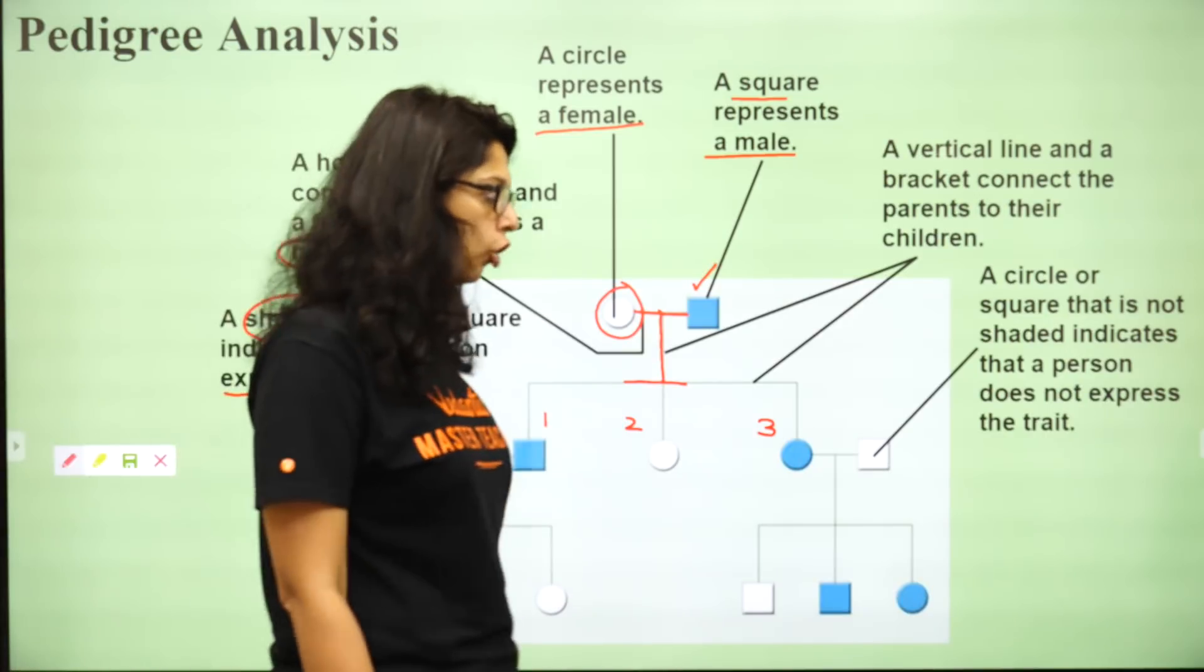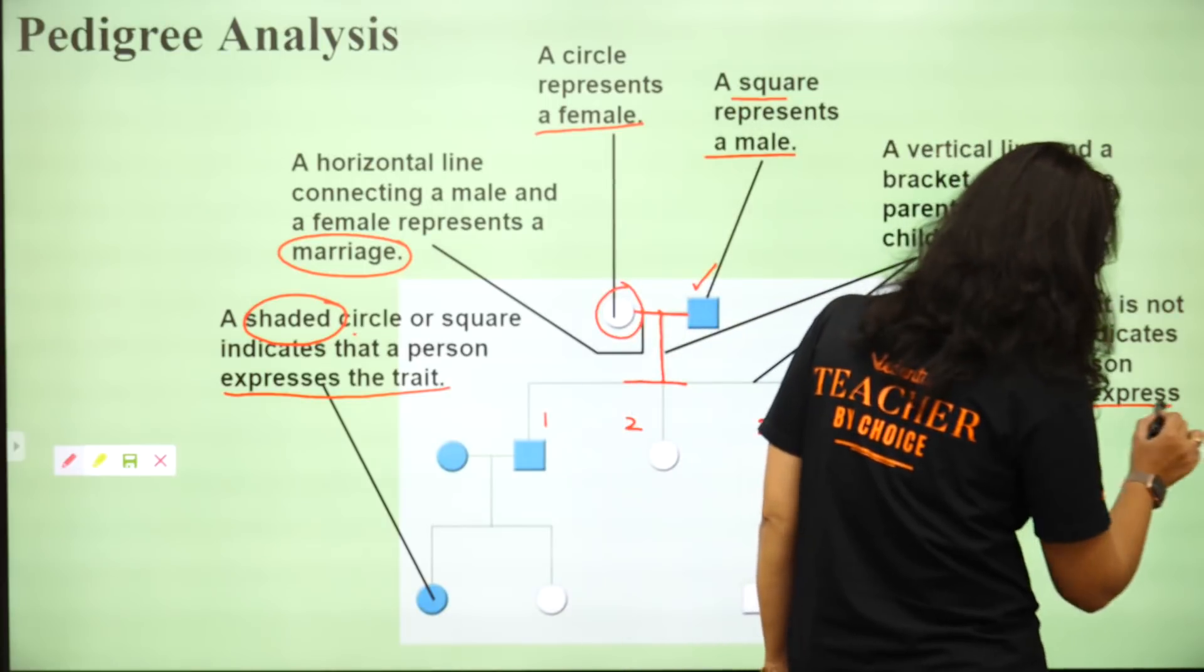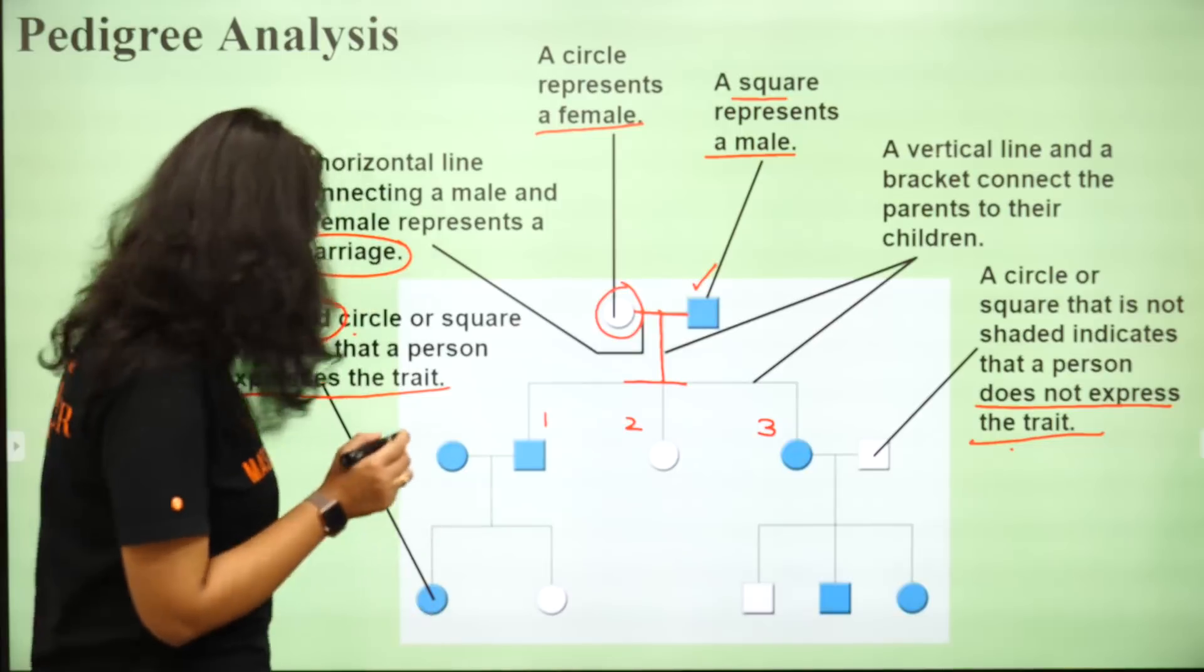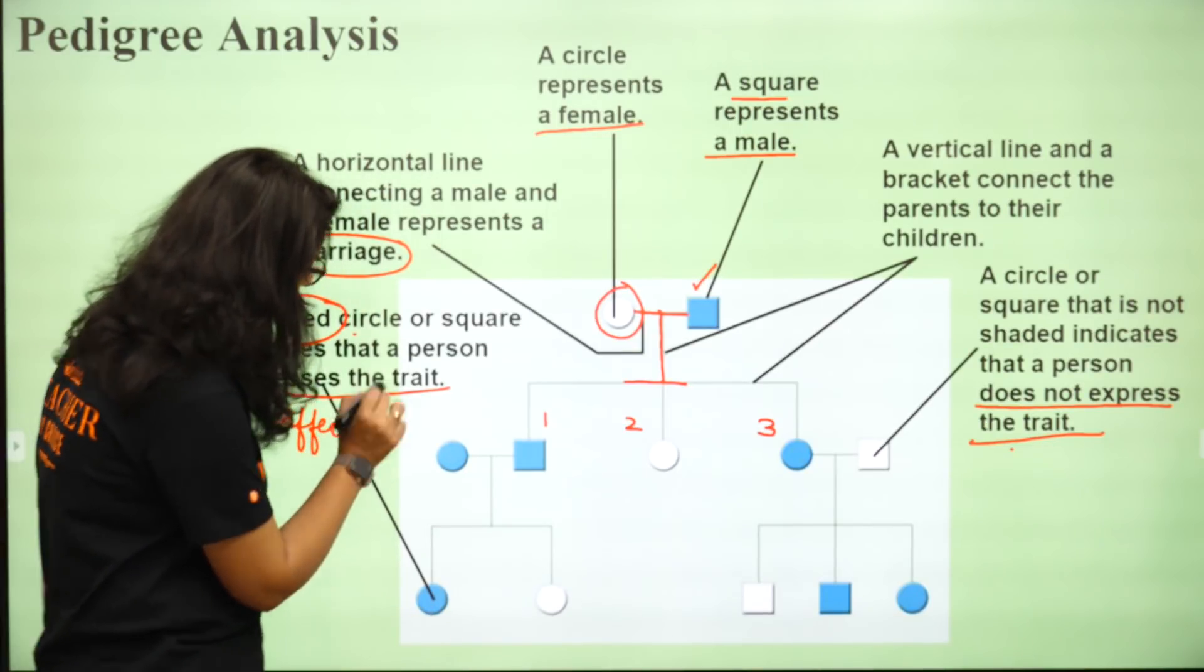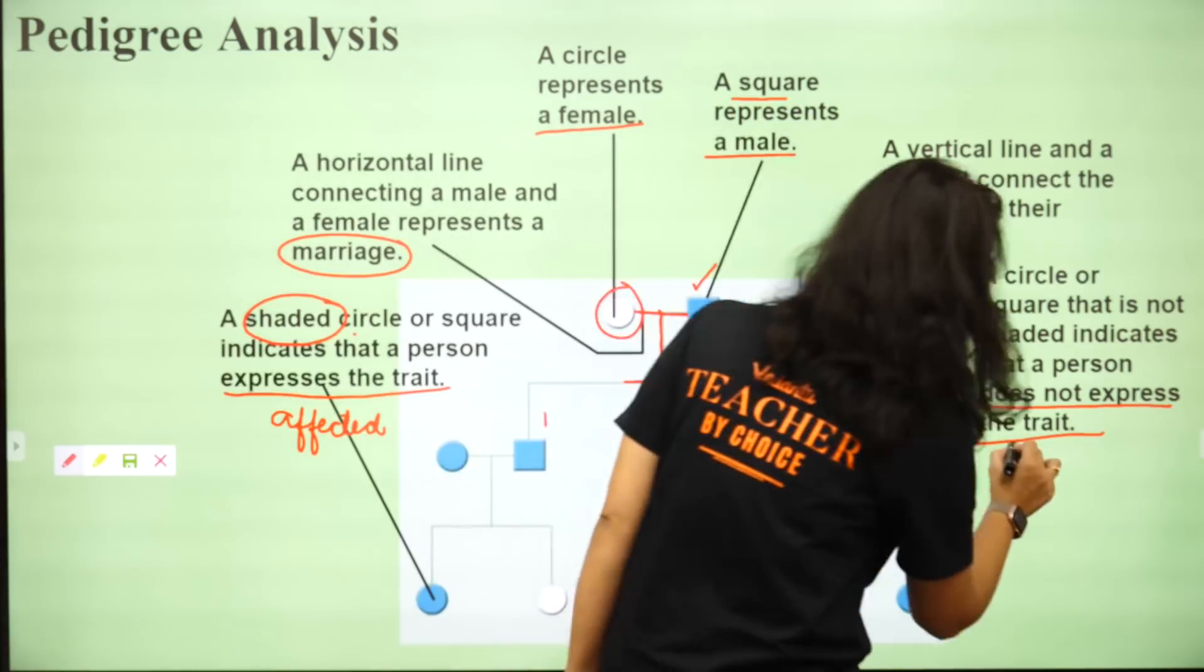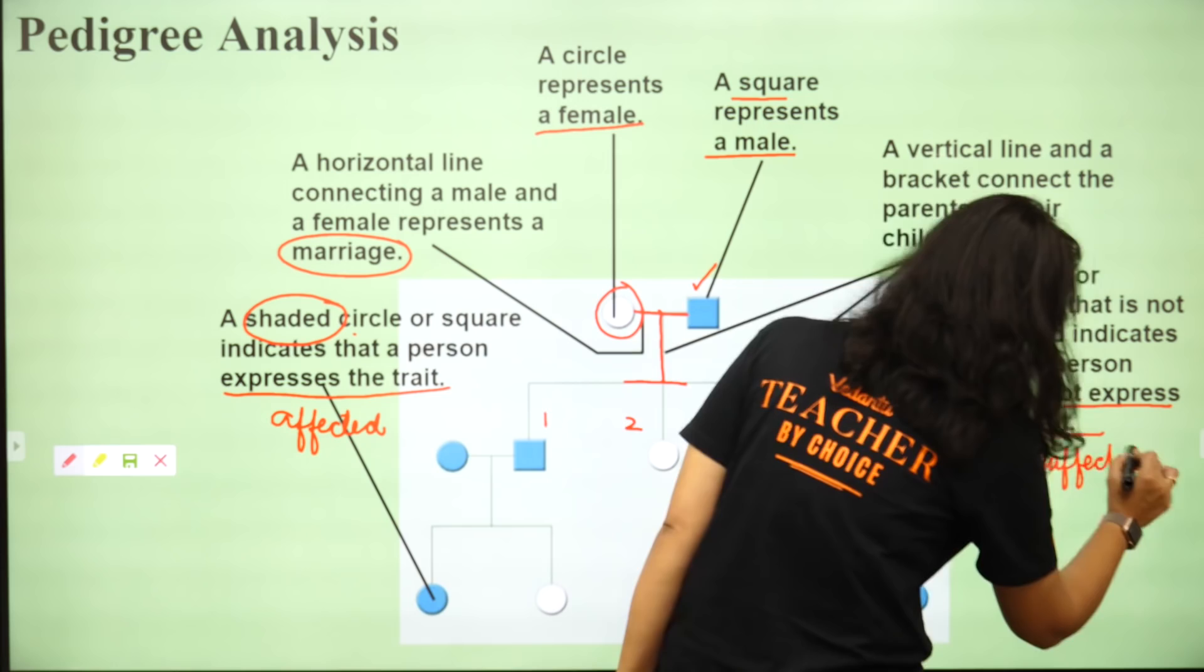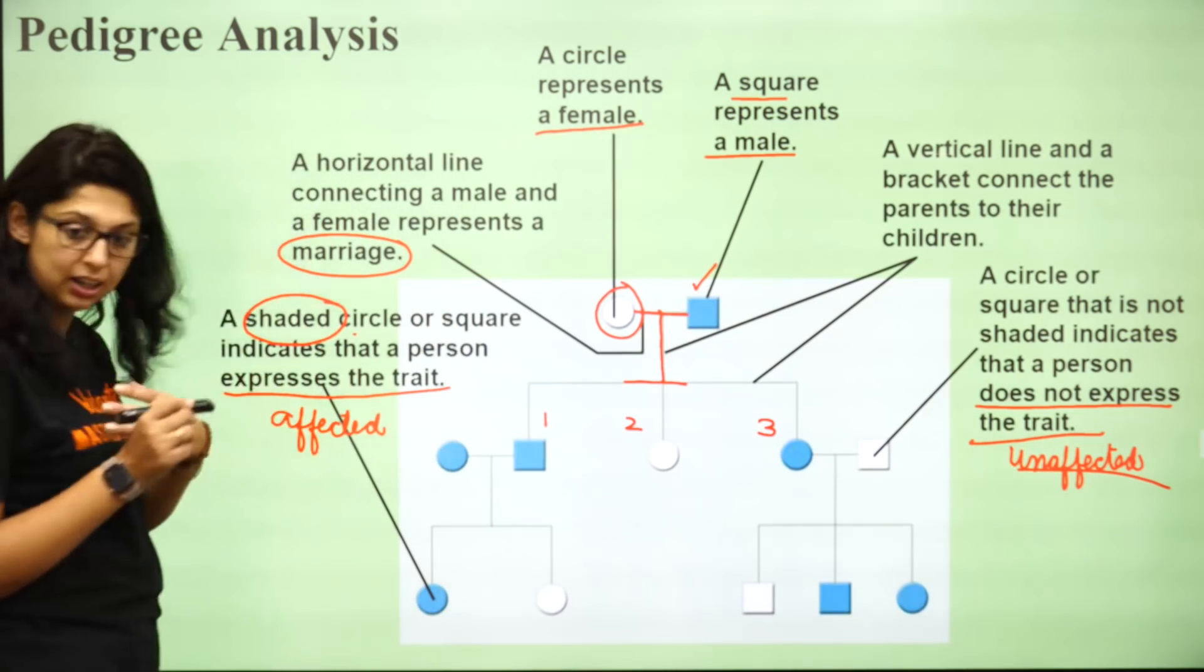A circle or square that is not shaded indicates that a person does not express the trait ya woh bilkul hi unaffected individual hai. Toh isko hum yaha affected likh lete hai and this individual ko hum yaha unaffected likh lete hai. Ab mein aapko thoda sa extra bata ti hoon from MCQ point of view but keeping it still short for a biobomb.